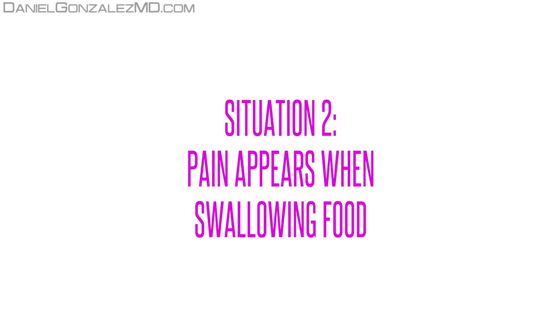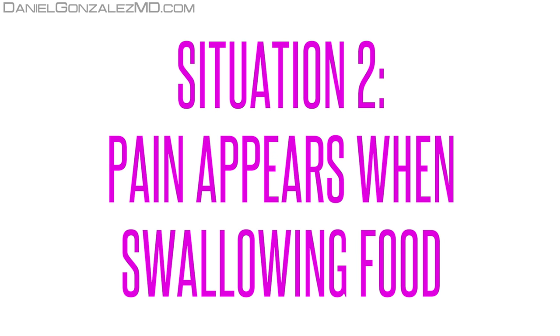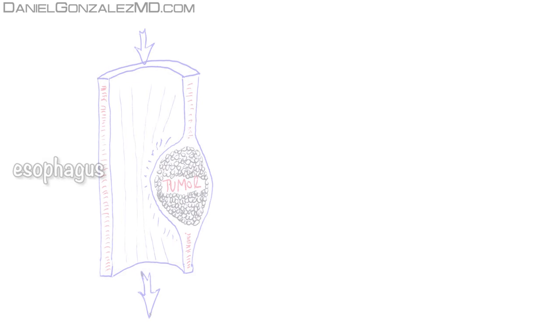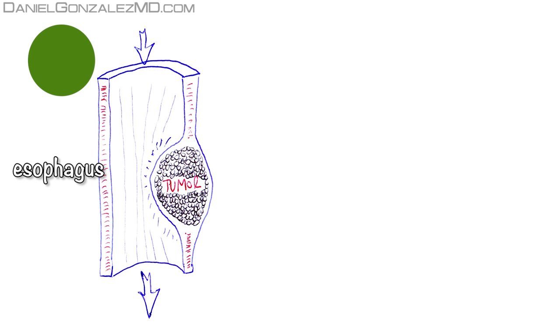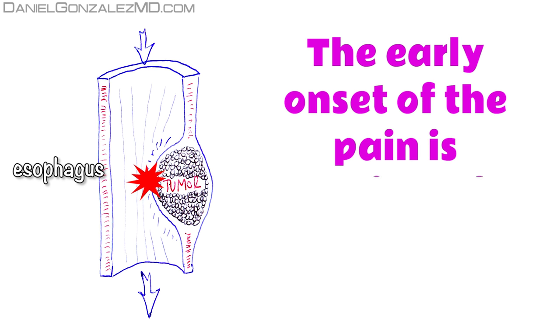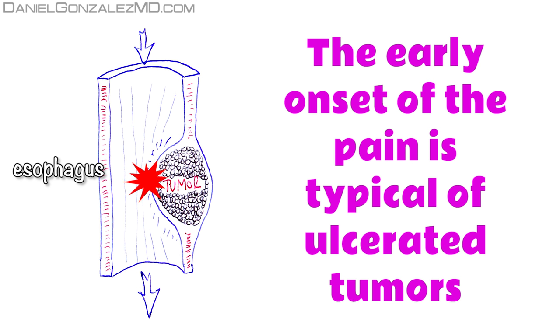Situation 2: Pain appears when swallowing food. In addition to the mechanical obstacle to the passage of food, esophageal cancer can hurt when food rubs and shoves in its transit to the stomach. The early onset of pain is typical of ulcerated tumors, but in tumors that have not broken, the esophageal mucosa will also eventually appear.